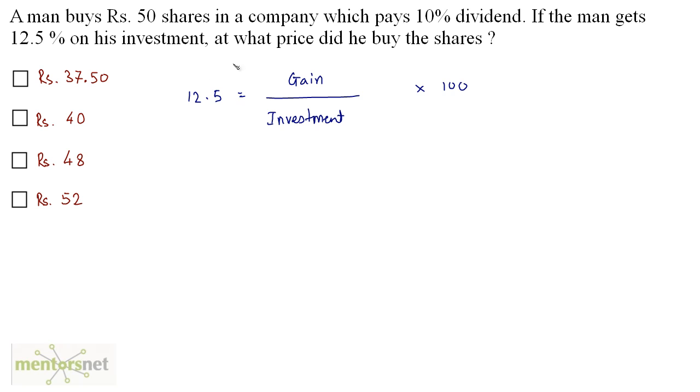Now what do we want here? We want the price at which the man bought the shares, that means the market price of one share. So I can say that this formula can be modified to gain on one share upon investment on one share.